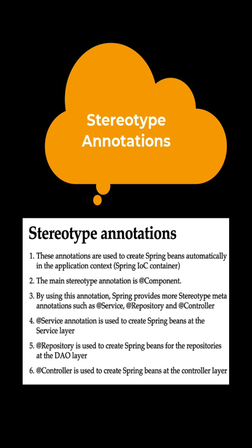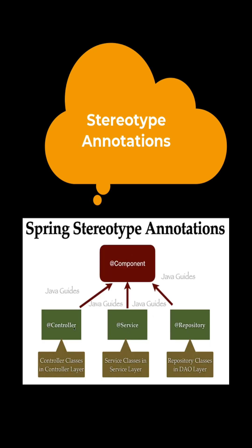By using the @Component annotation, Spring provides more stereotype meta-annotations such as @Service, @Repository, and @Controller annotations. Notice in the diagram: @Component annotation is the main stereotype annotation, and the other annotations — @Controller, @Service, @Repository — are derived from the @Component annotation.